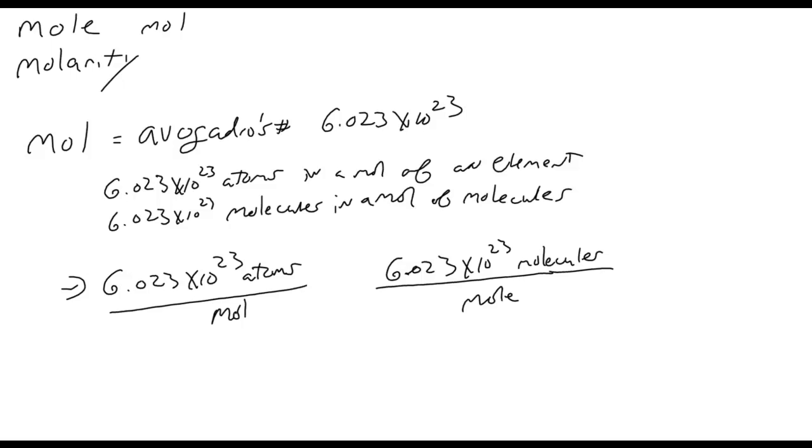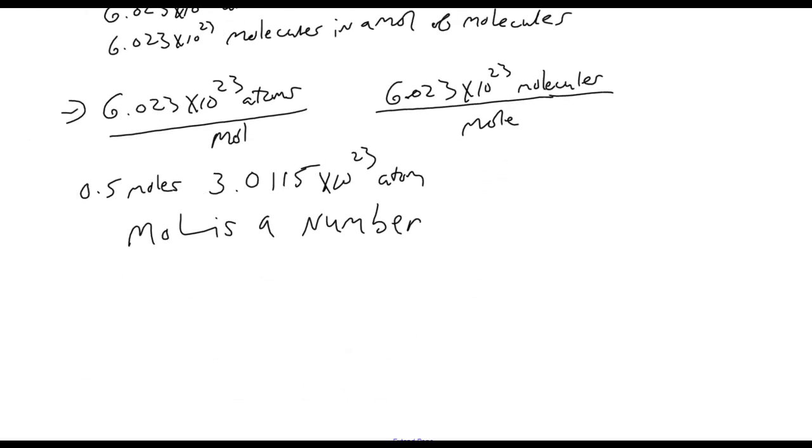So if we had half a mole, 0.5 moles, we would have 3.015 times 10 to the 23rd atoms. If we divided, or multiplied 0.5 times 6.023, or we divided by 2, we just took half the number of atoms in half a mole. So once again, mole is a number.